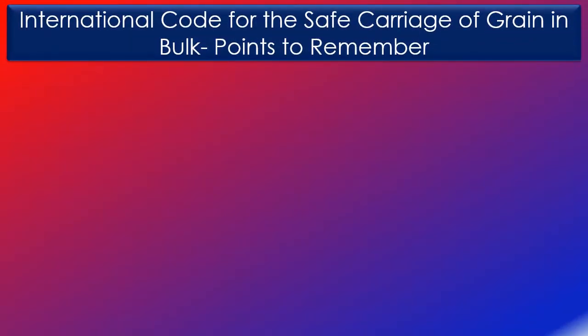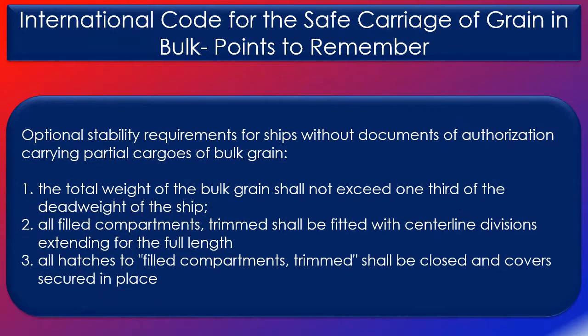Optional stability requirements for ships without documents of authorisation to carry partial cargoes of bulk grain describes the conditions under which grain can be carried without a DOA. In particular, the total weight of the bulk grain shall not exceed one-third of the deadweight of the ship. All filled compartments trimmed shall be fitted with centreline divisions extending for the full length. All hatches to filled compartments shall be closed and covers must be secured in place. If the ship meets such requirements, the flag state may allow her to carry grain without having a formal document of authorisation in place.